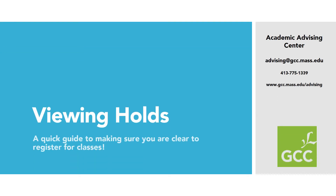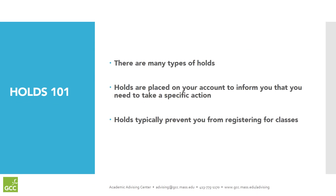Welcome to our quick guide for viewing holds so you can make sure you are clear to register for classes. There are many types of holds. Holds are placed on your account to inform you that you need to take a specific action. For example, you might need to pay your bill, send your transcript to admissions, or submit some paperwork required by your program. Holds typically prevent you from registering for classes.